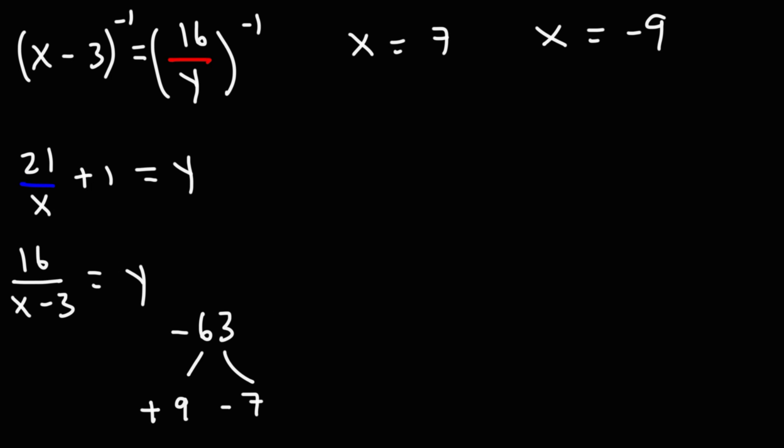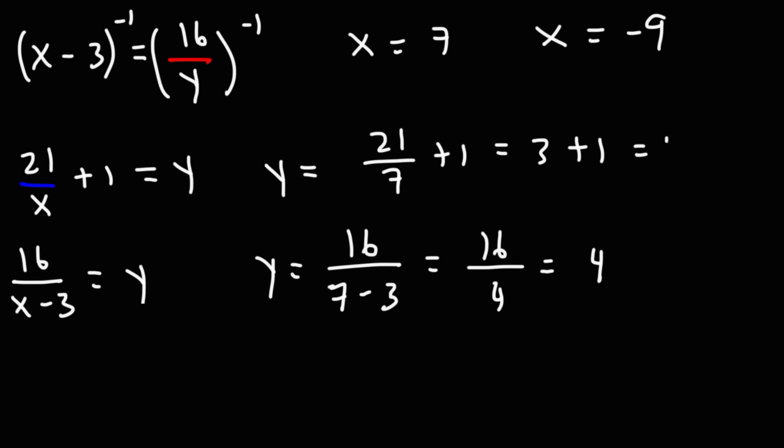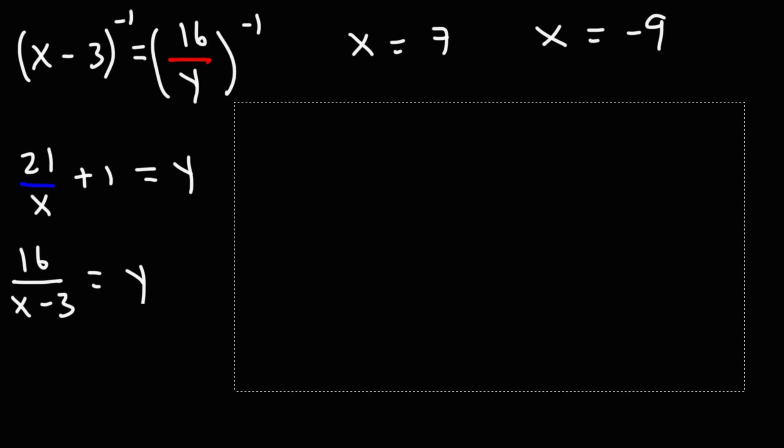Now let's calculate the corresponding y values. You can use any one of the two equations, but it should be the same, regardless of which equation you use. Let's start with this one. So I'm going to replace x with 7. 7 minus 3 is 4. 16 over 4 is 4. And to make sure our answer is correct, it should work for this one too. So it's 21 over 7 plus 1. 21 over 7 is 3. 3 plus 1 is 4. So that works. So when x is 7, y is 4.